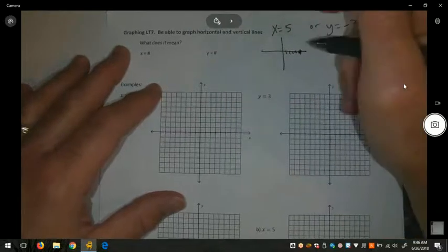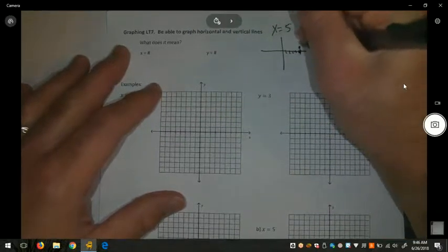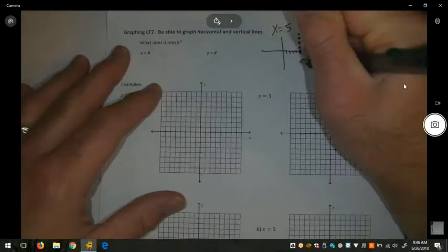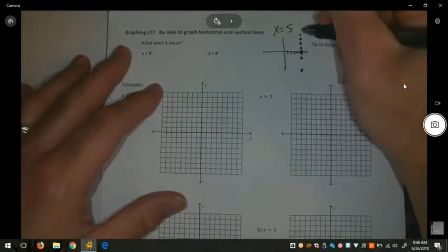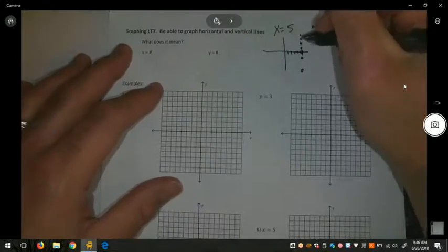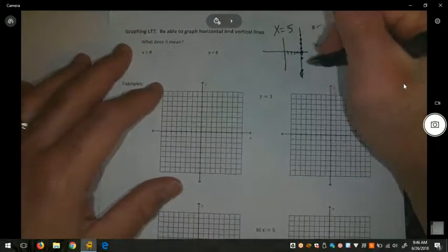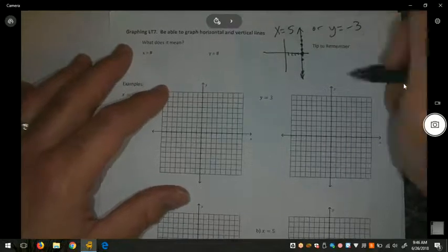That means my x-intercept is 5, and 5,1 is a point, 5,2 is a point, 5,3, 5,4, 5, negative 1, 5, negative 10. Every height that I could possibly cover, as long as it has an x-coordinate of 5, gives us a vertical line.